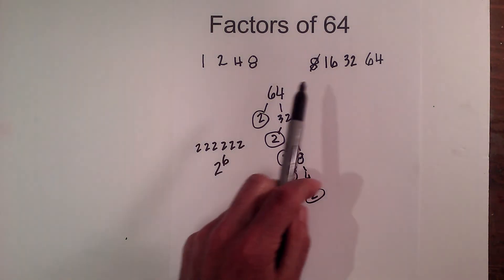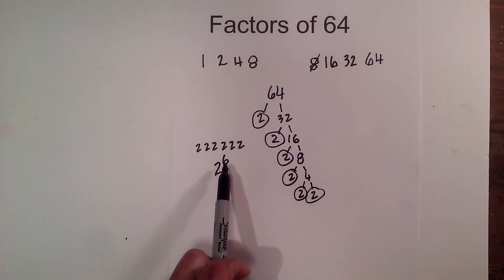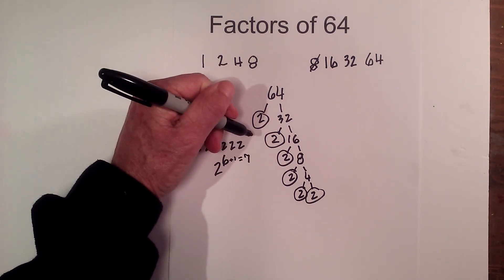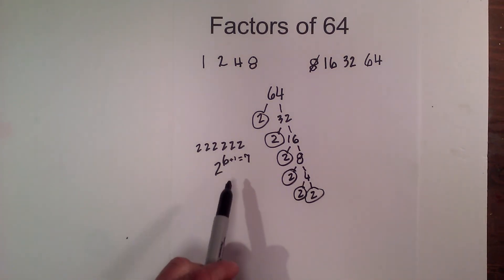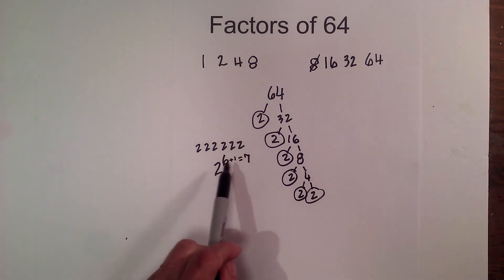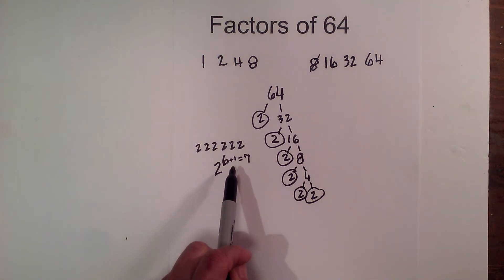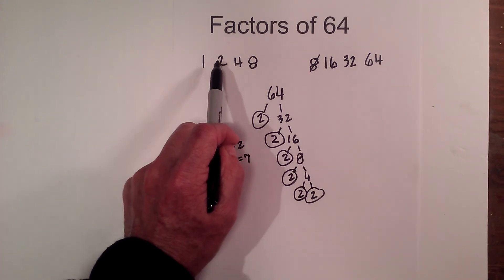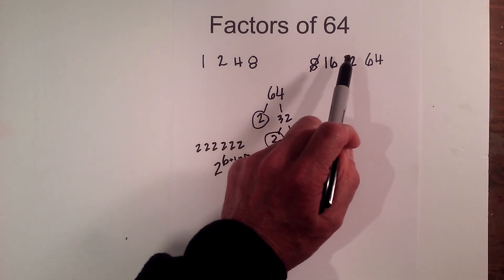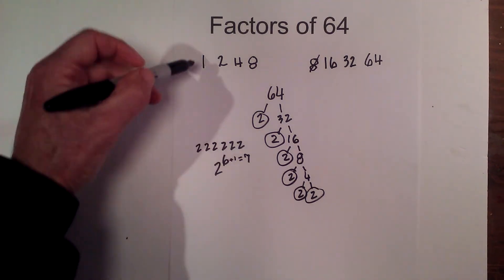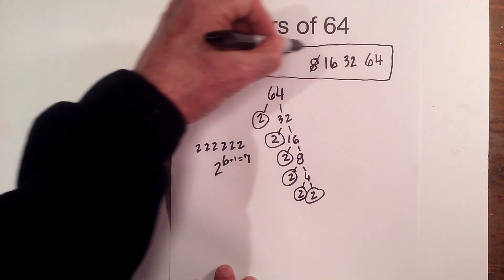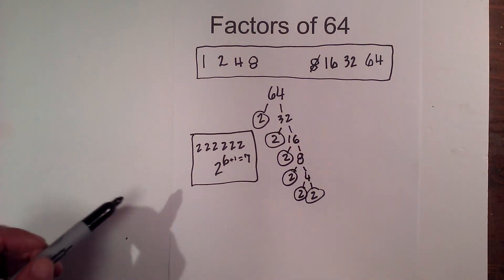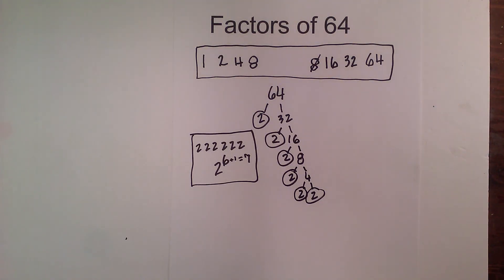To find the number of factors, add 1 to the exponent: 6 plus 1 equals 7. If there were more than one prime with an exponent, you would multiply those results together, but since there's only 2 to the 6th, it's just 7. Let's count: one, two, three, four, five, six, seven — we have all the factors. The factors of 64 are confirmed, and the prime factorization is shown right there.